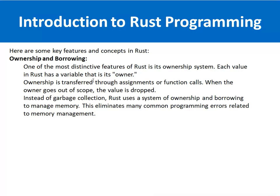The first key feature in Rust is the ownership and borrowing concept. One of the most distinctive features of Rust is its ownership system. Each value in Rust has a variable that is its owner, and ownership is transferred through assignments or function calls. When the owner goes out of scope, the value is dropped. Instead of garbage collection like Java and C#, Rust uses a system of ownership and borrowing to manage memory, which eliminates many common programming errors related to memory management.